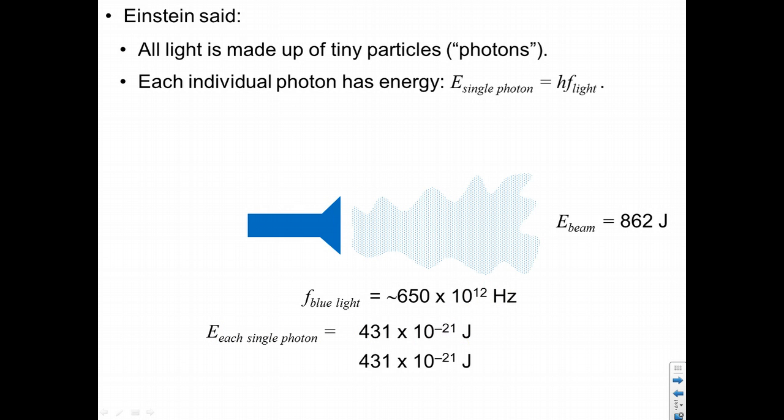So if we take this energy, and we multiply by 2 times 10 to the 21, well, the 10 to the negative 21 times 10 to the 21 is 1. So those cancel out. And we have 431 times 2, which is 862, the energy of the beam.